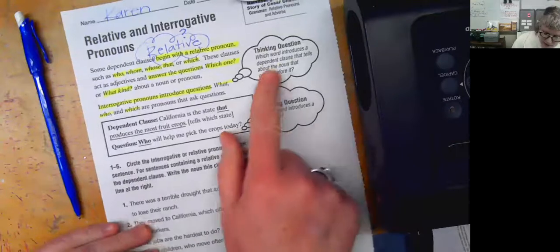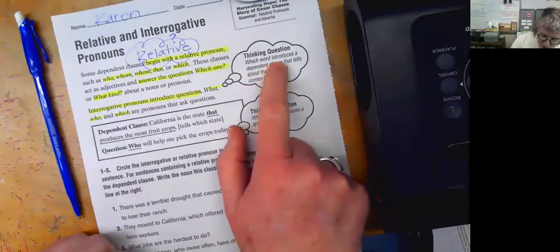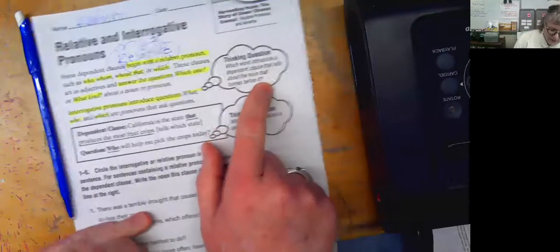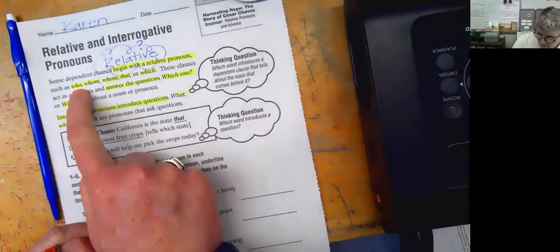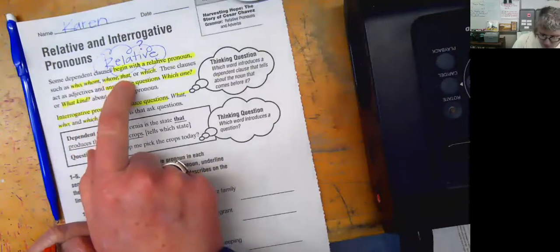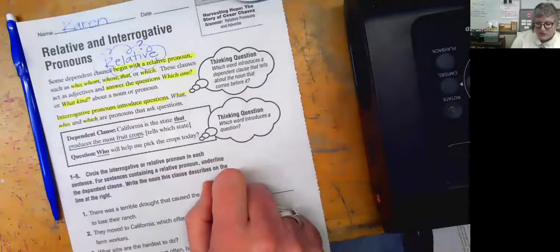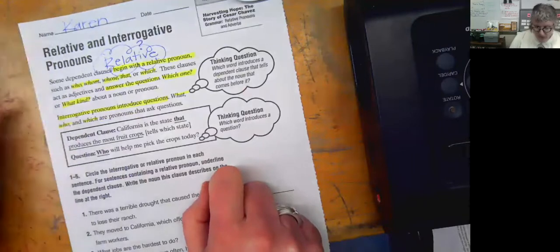So let's look at our word bubbles, our thought bubbles. Which word introduces a dependent clause that tells about a noun that comes before it? Well, that would be a relative, a relative clause, right? Who, whom, whose, that, which, and which word introduces a question? That would be an interrogative clause, right? An interrogative dependent clause. Okay.